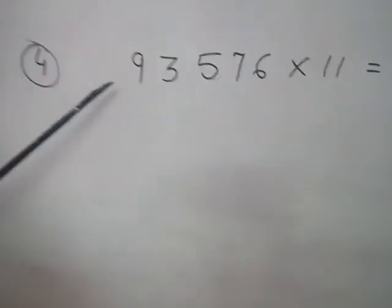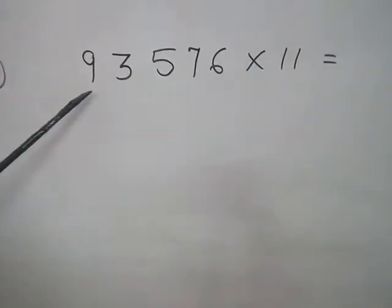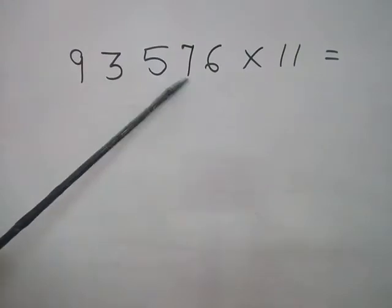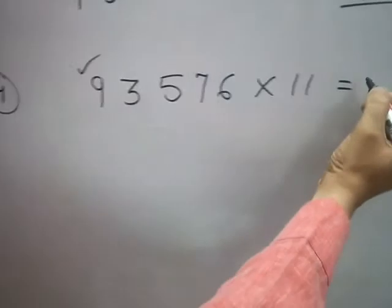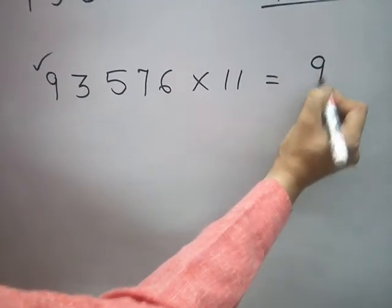For a 5-digit number, I have 93576 times 11. Same thing, same pattern. 9 is the first digit, keep it here like this.